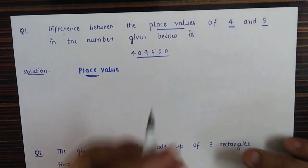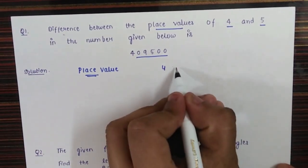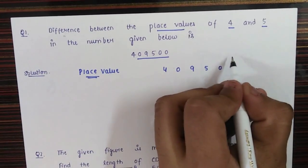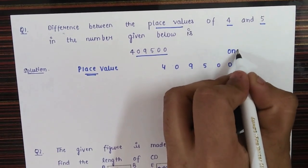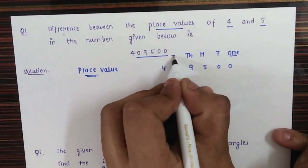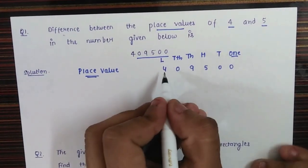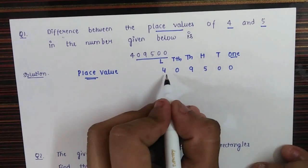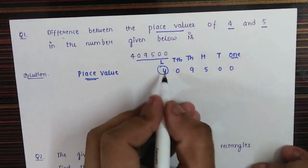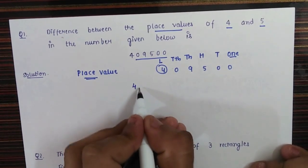For example, take the number 4,09,500. Written in positional form — ones, tens, hundreds, thousands, ten thousands, lakhs — the place value is found by multiplying the face value by its position. For the digit 4, the place value would be 4 lakhs.